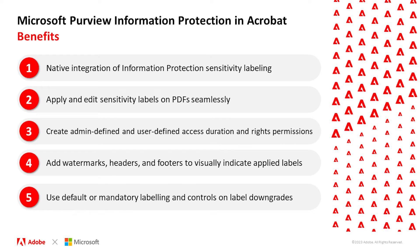Microsoft Purview Information Protection classifies and protects PDFs via label inheritance for Word, Excel, and PowerPoint. This integration brings the same quality of classification, labeling, and protection already available in Office to PDFs via Adobe Acrobat. Acrobat also honors sensitivity label policies like default labels, mandatory labels, and controls on label downgrades.